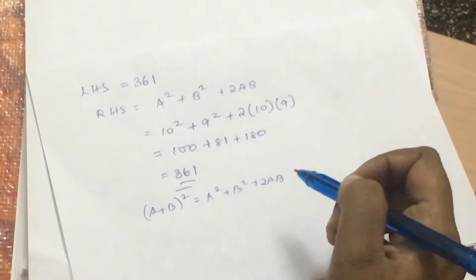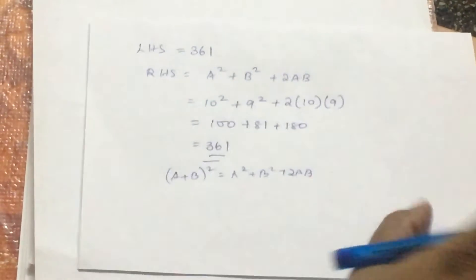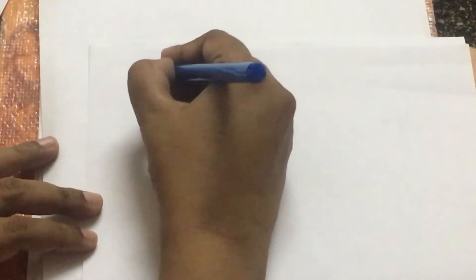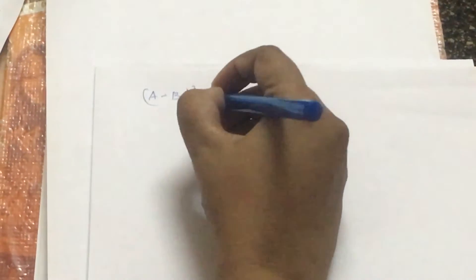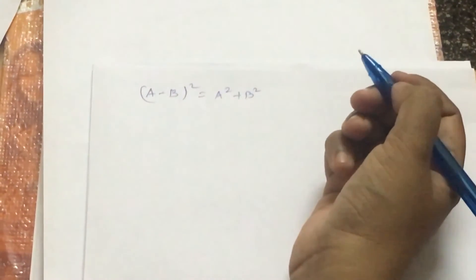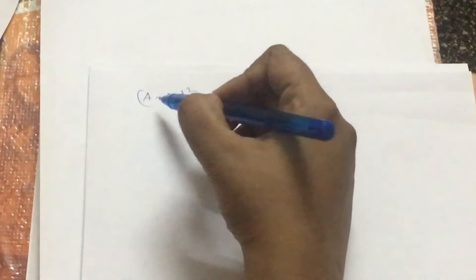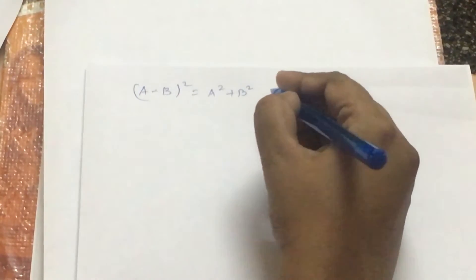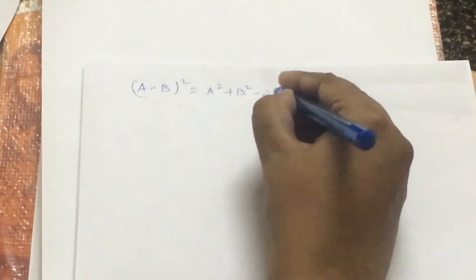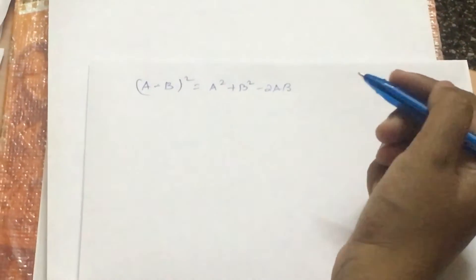Let us do the same thing for the next identity which is (a-b)² and that is equal to a² + b². As I said earlier, the only difference between the two identities is in the sign. The other one had a plus here, so plus 2ab. Now, this one has a minus. Therefore, minus 2ab.